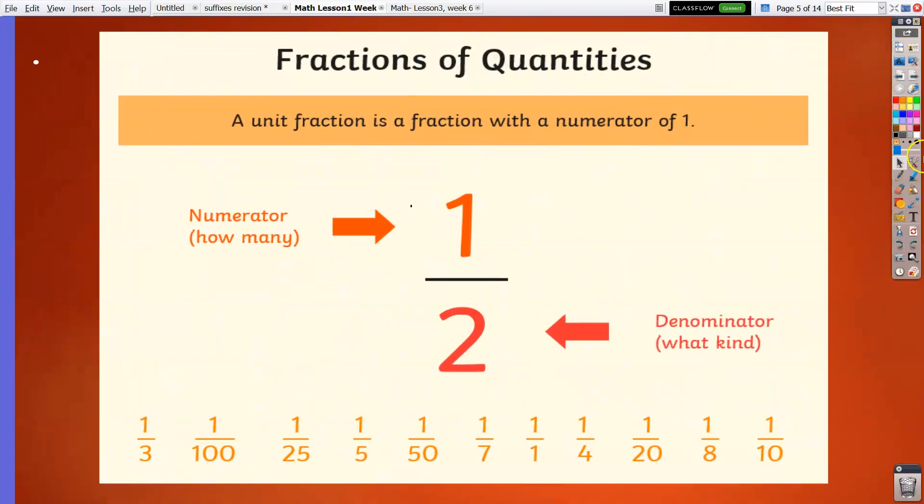Here is the fraction quantities. If you just observe, we have two parts of a fraction. The top part is called the numerator and the bottom part is called the denominator. If the fraction has 1 as the numerator, that is called a unit fraction. So one-half is a unit fraction, and also all the fractions below that have 1 as the numerator.